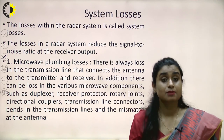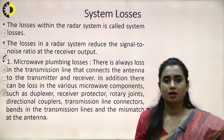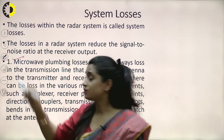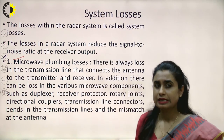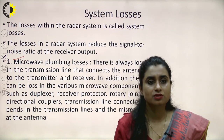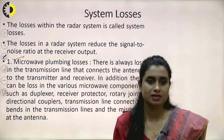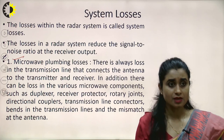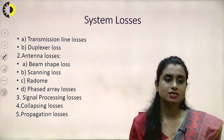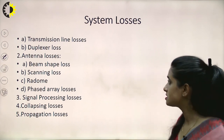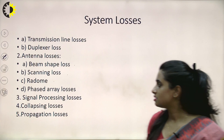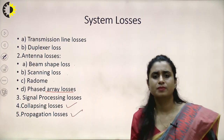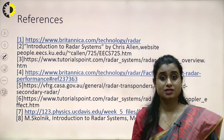System losses in radar communication arise from environmental noise, attenuation, diffraction, and reflection. The most common are microwave plumbing losses - there are always losses in transmission lines connecting the antenna to the transmitter and receiver, as well as losses in microwave components such as duplexers, receiver protectors, rotary joints, directional couplers, and transmission lines. Other losses include transmission line losses, duplexer losses, antenna losses, beam shape loss, scanning loss, radome and phased array losses, signal processing losses, collapsing losses, and propagation losses.